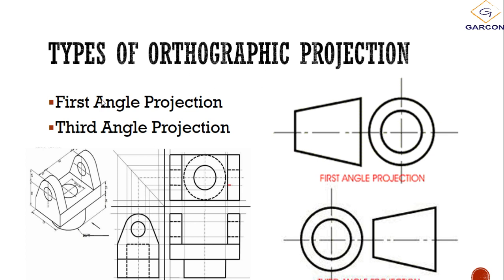The two categories are first angle and third angle projection, each with a distinct symbol. The symbol shows the top and side of a cone. In first angle projection, the broad base of the cone points toward the circles. In third angle projection, the short narrow side points toward the circles. If you were to flip the first angle symbol over, it would become the third angle symbol.